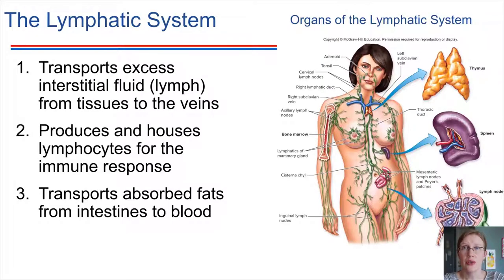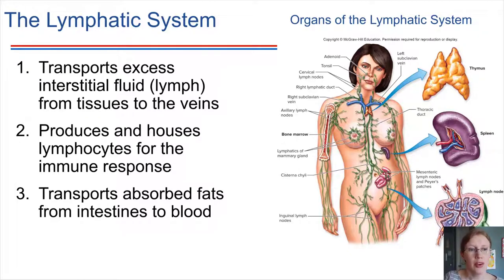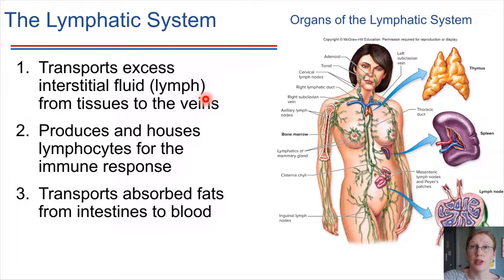Finally, the lymphatic system. The circulatory system of the body consists of two systems: the cardiovascular system — heart, blood vessels, and blood — and the lymphatic system. Together, these make up the overall circulatory system. The lymphatic system transports excess interstitial fluid — fluid that builds up in the tissues — back to the veins, providing a bridge between the tissues and the bloodstream.